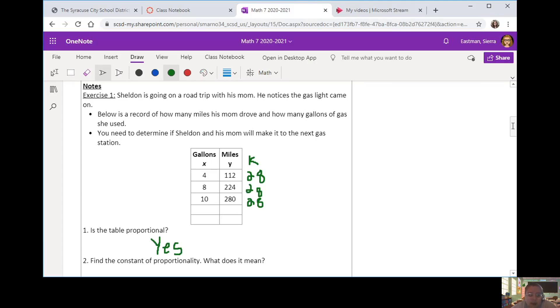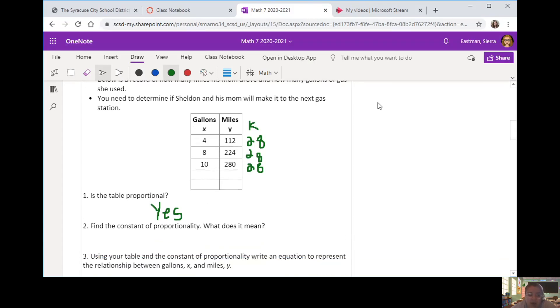Question two, find the constant of proportionality. Well, what number did we get that they were all equal to? 28. 28 is our constant of proportionality.